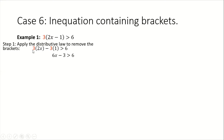When we simplify, 3 times 2x will give us 6x, and negative 3 times 1 will give us negative 3, and we put back our greater than sign and our 6. At this stage, remember, our objective is to isolate x, or the variable, by itself.